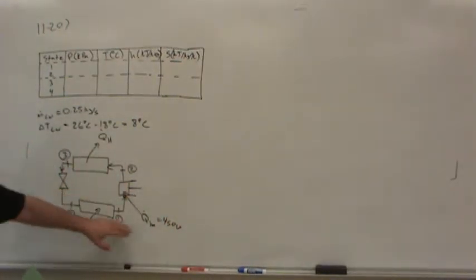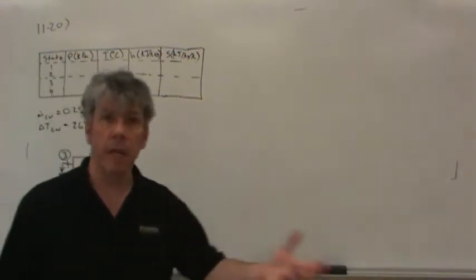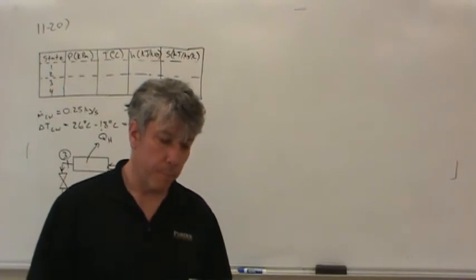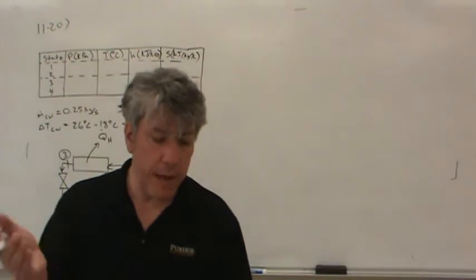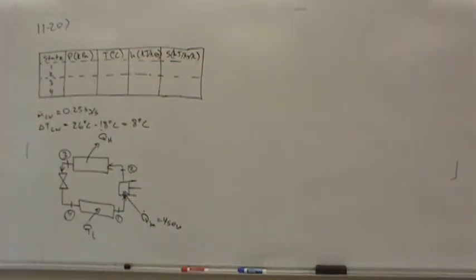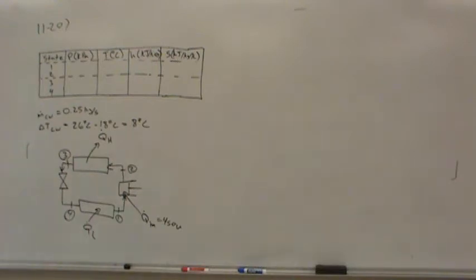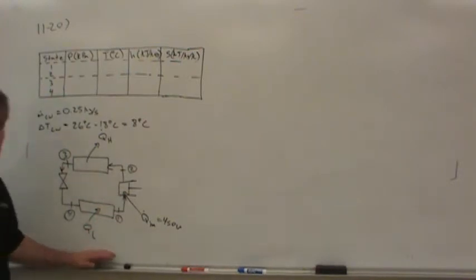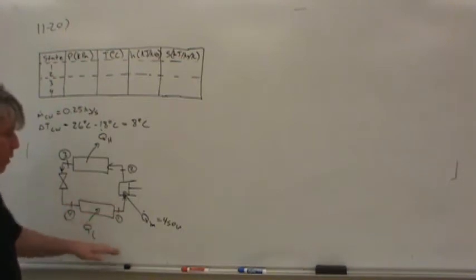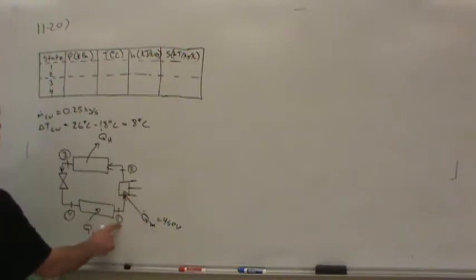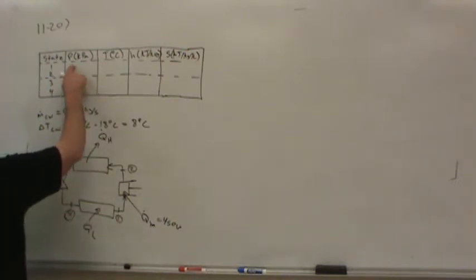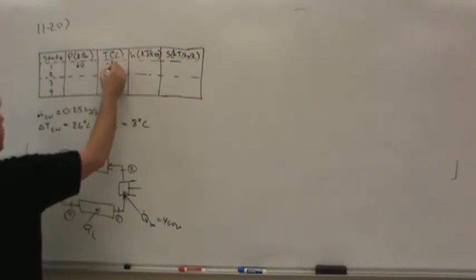They've given us some information about the refrigerant itself to put into the table. The refrigerated space is at negative 30 degrees Celsius. The inlet state of the compressor is 60 kilopascals and negative 34 degrees — that's state one right here. While the refrigerated space is at negative 30 degrees, the refrigerant has to be at a lower temperature, apparently negative 34 degrees. So in state one, the pressure is 60 kilopascals and temperature is negative 34 degrees Celsius.